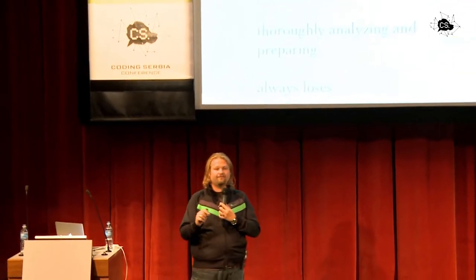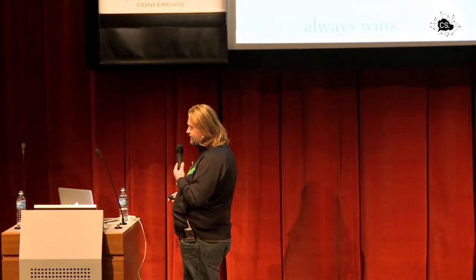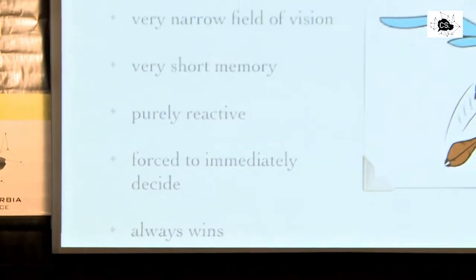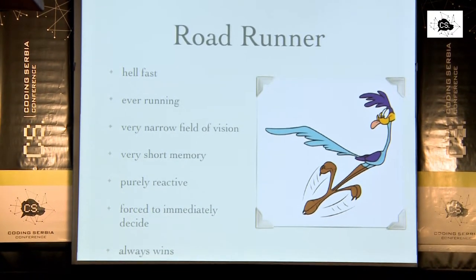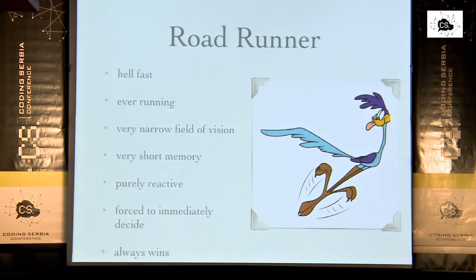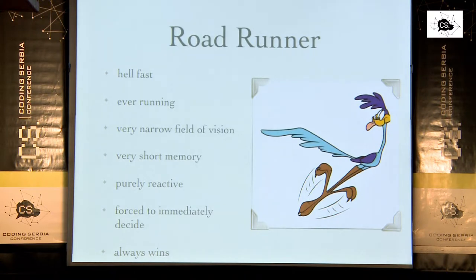He's always thoroughly analyzing, planning, and preparing — and the most interesting thing is that this guy always loses, he has never won. On the other hand, the Road Runner is the complete opposite. He's incredibly fast, always on the road, has just a narrow field of vision, very short memory, and is purely reactive — he always waits for what Coyote will do and reacts on it. He always makes the best decision at this moment in time, and he always wins.